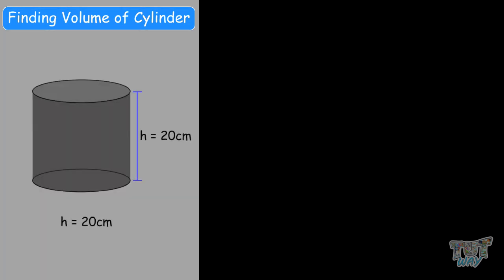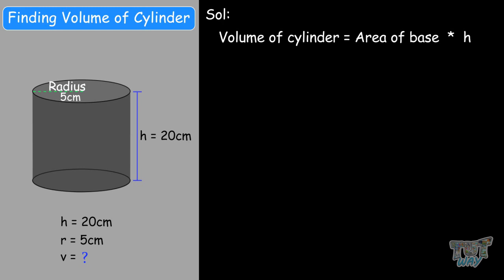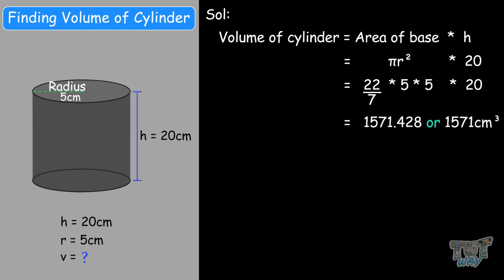Here is our first example. We have a cylinder with a height of 20 centimeters and a radius of 5 centimeters. So what will be the volume? Volume will be area of the base multiplied by height: π r squared multiplied by 20, which equals 22/7 times 5 times 5 times 20. So you get 1,571.428, rounded to 1,571 centimeters cubed. So this is the volume of the cylinder.